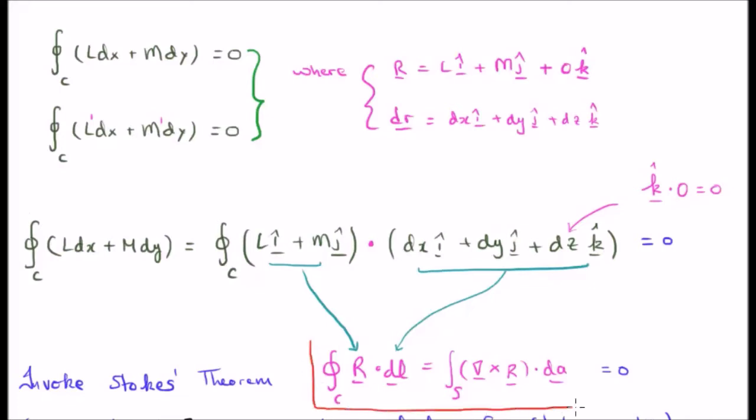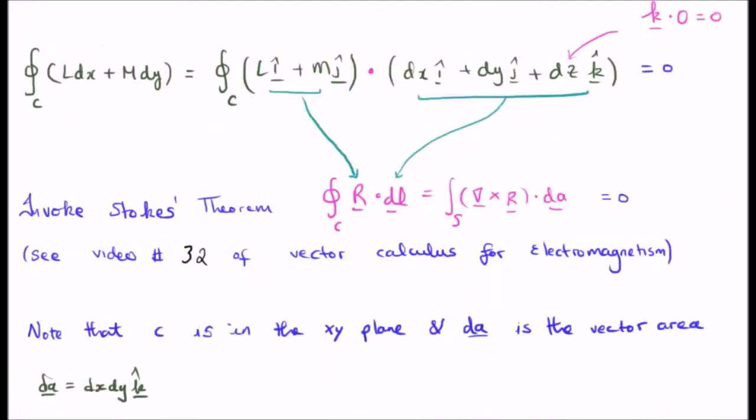Stokes' theorem allows us to go from a closed line integral to a surface integral, or we go to a surface integral but involves the curl of a vector field. Now I don't want to get too bogged down in the vector calculus. You can check my video section on vector calculus for electromagnetism if you would like to know more. You can see video number 32 in my series of videos on vector calculus for electromagnetism for more about Stokes' theorem.